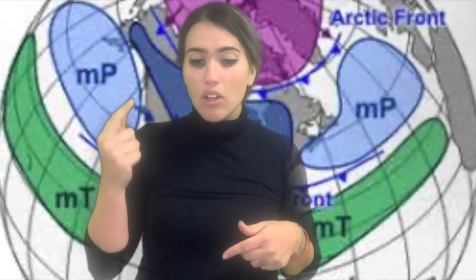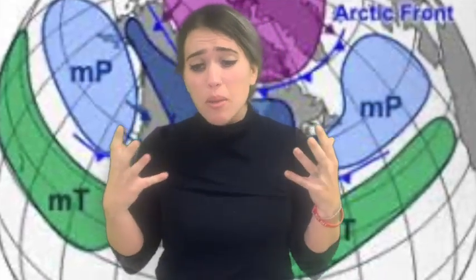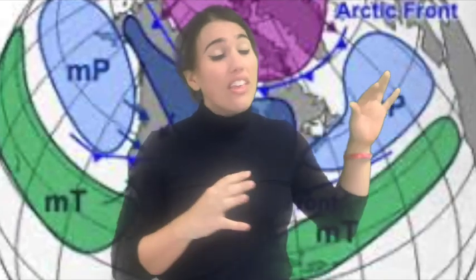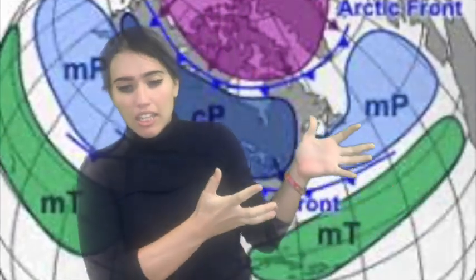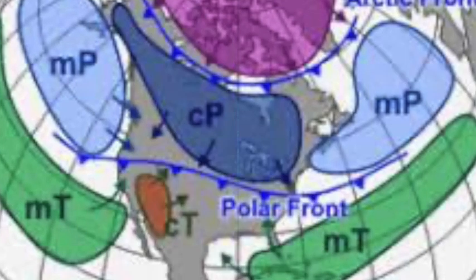Air masses impact our weather every single day. They can bring arctic weather in from the poles and it's going to be really, really cold. They can also bring in major heat waves during the summer. You might notice more polar weather in winter, and warmer heat waves during the summer.